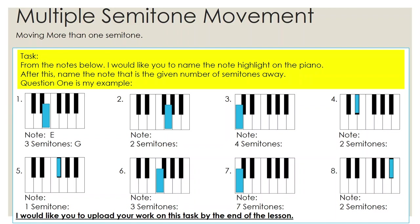We need to work out what note is three semitones away from E. Let's get the piano up. We've got E, and next to E would be F — that's one semitone. Next to that would be F sharp, the black note, which would be another semitone — so that's two semitones. And then a final semitone movement which brings us to G. Three semitones away from E is G. So we've got E, and our three semitones away is G.